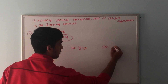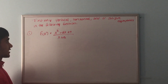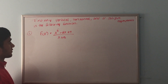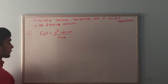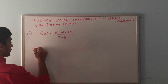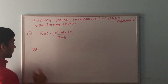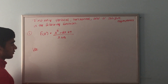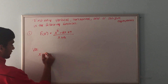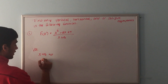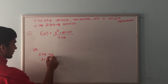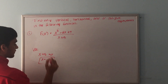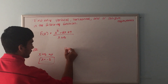Just like the previous problem, if there's a horizontal asymptote there is no oblique asymptote. Our last problem is f(x) equals x squared minus 6x plus 7 over x plus 5. Let's start with the vertical asymptote: we set the denominator equal to 0, so x plus 5 equals 0, giving x equals negative 5 as our vertical asymptote.